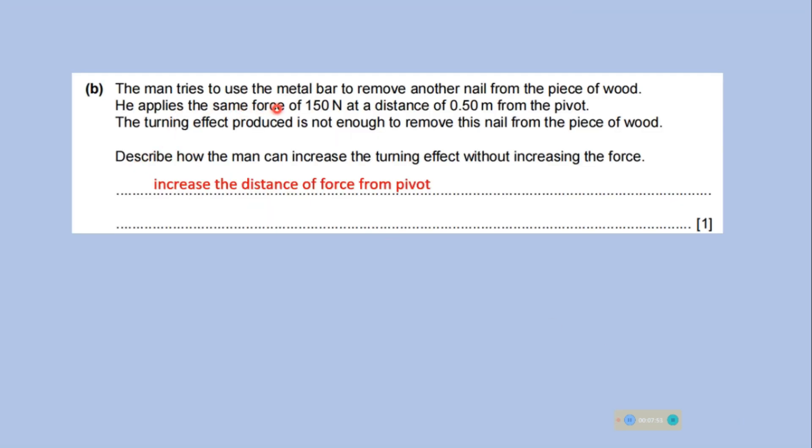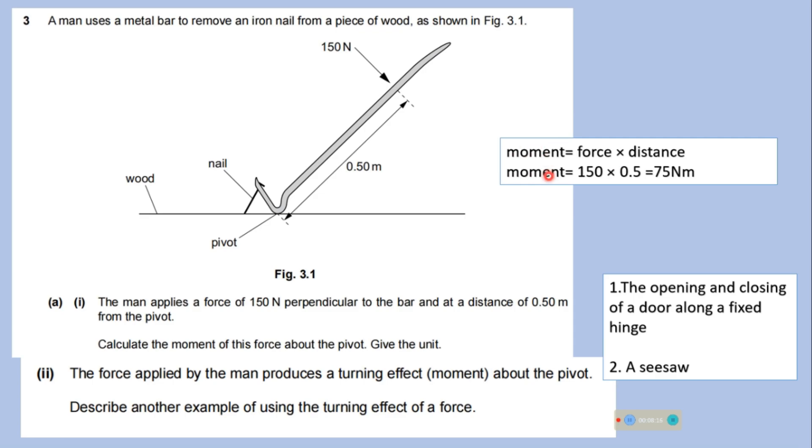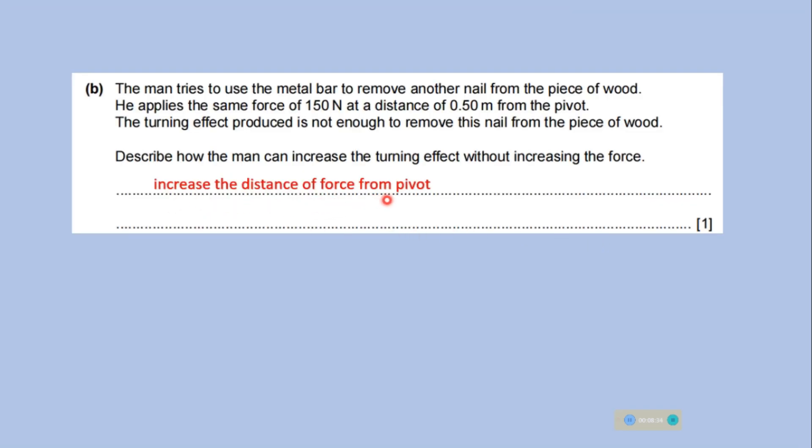The man tries to use the metal bar to remove another nail from the piece of wood. He applies the same force of 150 Newton at a distance of 0.50 from the pivot. The turning effect produced is not enough to remove this nail from the piece of wood. Describe how the man can increase the turning effect without increasing the force. So, we know that in order to calculate the movement we need two physical quantities. Force and distance. So, if you want to keep the force constant you have to increase the distance. The perpendicular distance from the pivot you have to increase in order to increase the turning effect of that force. So, the answer will be increase the distance of force from the pivot.